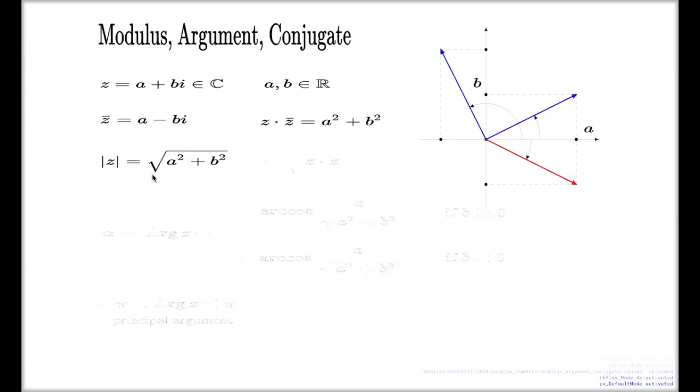The modulus of a complex number is the sum of the squares under the square root, or in terms of the complex conjugate, it's the root of the product z times z-bar. Geometrically, the modulus is exactly the length of the vector representing your complex number on a two-dimensional plane.